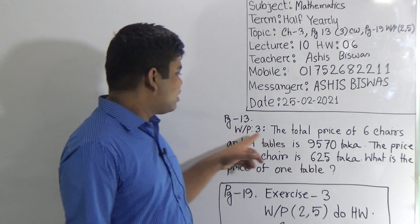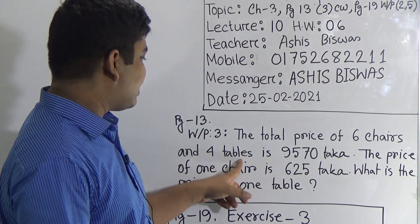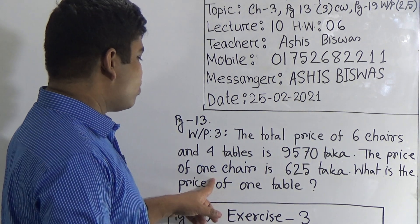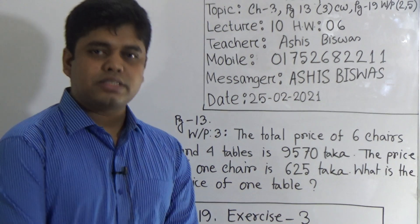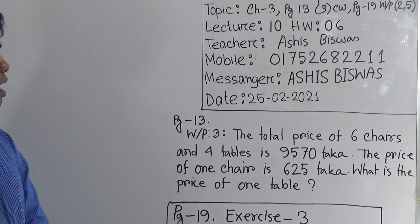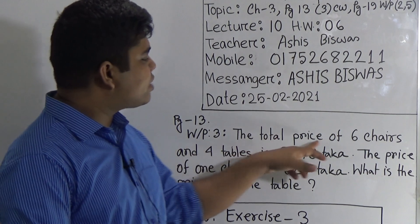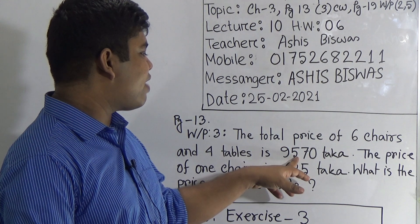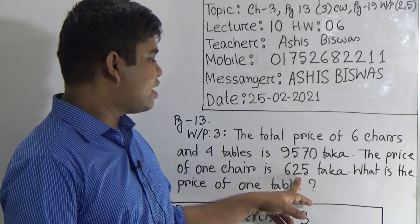So here, the total price of 6 chairs and 4 tables is 9570 taka. The price of one chair is 625 taka. What is the price of one table? Dear students, notice we need to find out the price of one table. But you notice, the first information is total price of 6 chairs and 4 tables is 9570, and the price of one chair is given, which is 625 taka.